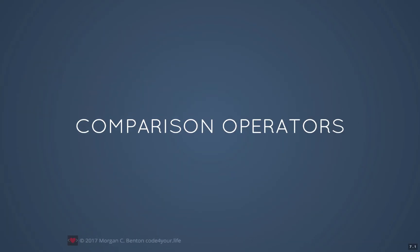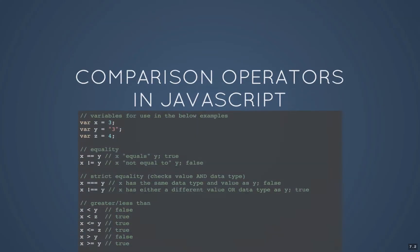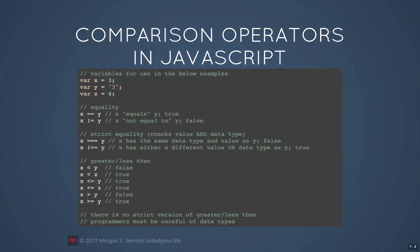Now let's look at comparison operators. These are generally for determining whether two values are equal or one is less than or greater than the other. In JavaScript, I've created three variables: x is numeric, y is a string, and z is also numeric. To determine whether two are equal, there are two different operators. There's the double equals sign, which checks just the value. So x equals equals y — since the integer 3 equals the string three in value — would return true. Likewise, x not equals y would return false.